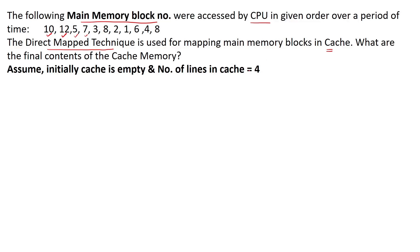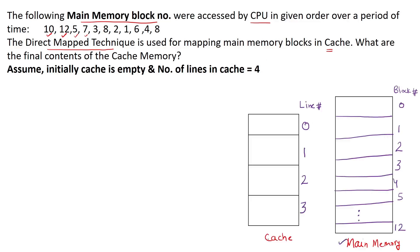Let's understand this question better. We have this main memory and this cache memory. Main memory is organized in the form of blocks — block number 0, 1, 2 and so on. The last block mentioned is 12, although we are not given exactly how large the main memory is, so it can have more than 12 blocks. The cache memory has 4 lines: 0, 1, 2, 3.